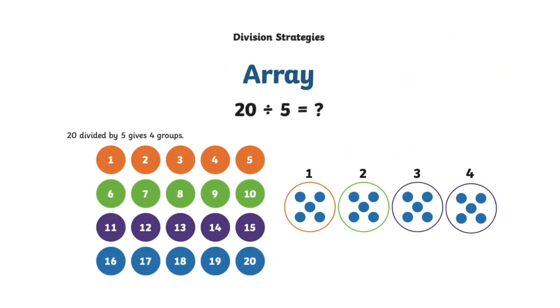Array: rows and columns with an equal amount in each. 20 divided by 5 gives 4 groups.